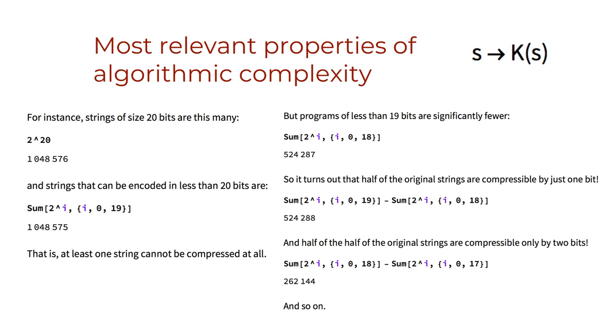It is more precise and appropriate to refer to the uncomputability of the function s to K(s) as semi-computable because one can actually approximate algorithmic complexity of s from above. That is, one can calculate the upper bounds of K. One traditional way to calculate upper bounds on K is, as we said, with the use of lossless compression algorithms. A trivial upper bound on K for any string s is simply the program print s. If a string s does not allow any other shorter program than print s, then s can be said to be uncompressible or algorithmic random.